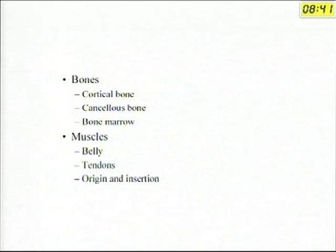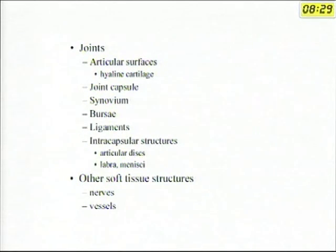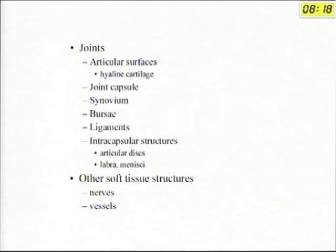In the bones, in an MRI we are going to comment on marrow and cortex. In the muscles, we are going to talk of bellies, tendons, their origins and insertions. In the joint, we are going to talk of articular surfaces including articular cartilage, joint capsule, synovium, related bursae, ligaments, articular disc, labria and menisci. We also look at the neurovascular bundles side by side.